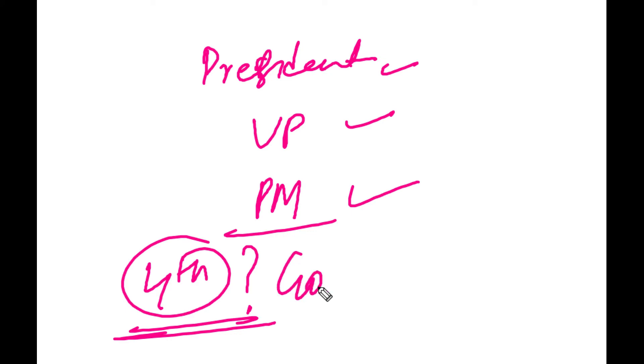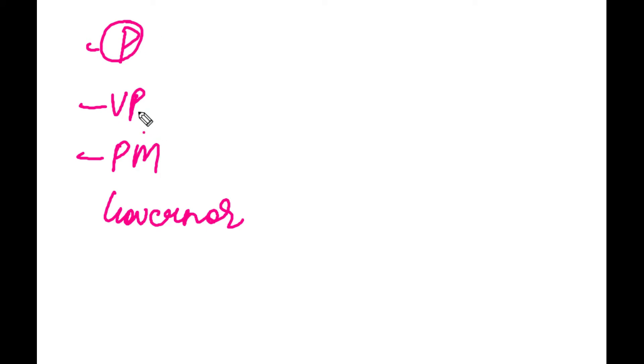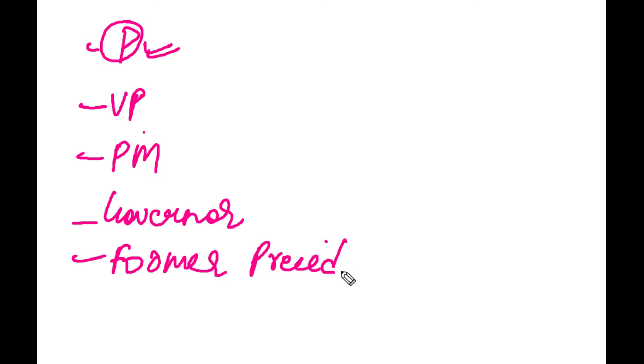The fourth most important persons are the governors. Just as at the center there is the president, at the state level there is the governor. So the governor is at the fourth number. Who is at the fifth number? We have president, vice president, prime minister, and then the current serving governor. Once someone has served as president, no matter what, they become a former president.